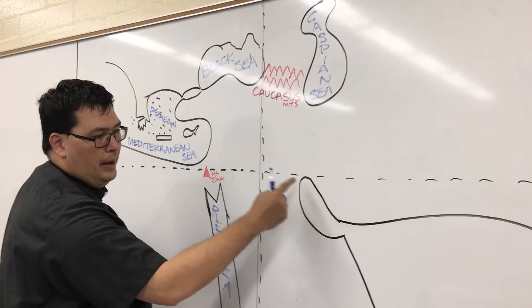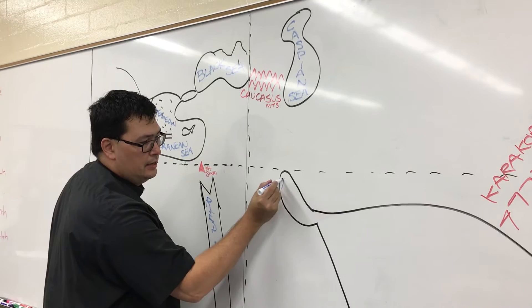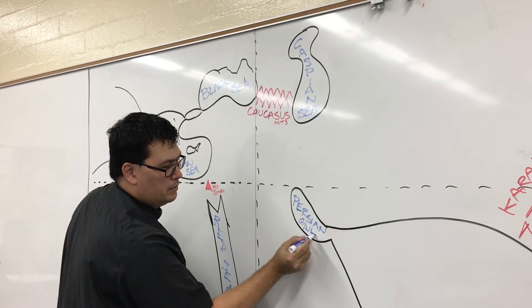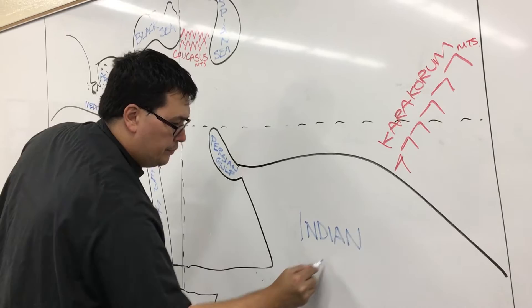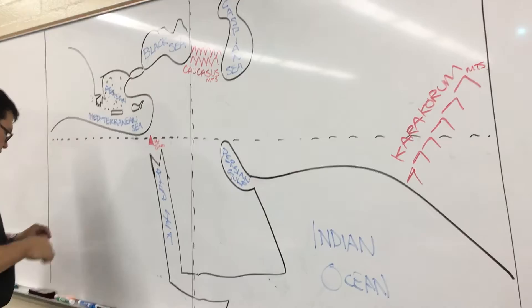Two more bodies of water to know about. This little bite here into Arabia, this is rated PG-13 because it is the Persian Gulf. So the Persian Gulf is here. And then the big ocean that's east of Africa is the Indian Ocean.